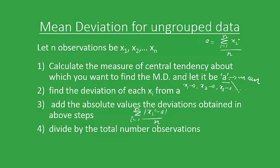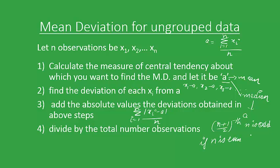For the case where A equals the median, the point A changes by arranging the data in ascending order. To calculate the median: if n is odd, the median is the ((n+1)/2)th observation; if n is even, the median is the average of the (n/2)th and ((n/2)+1)th observations. After finding this point A, the steps are similar to the mean case — we take the deviations, sum up their absolute values, and divide by the total number of observations n.